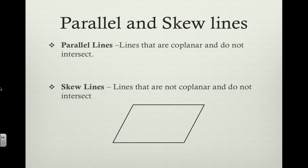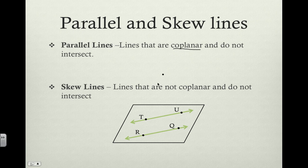First things first, the definition of parallel lines. Parallel lines are lines that are co-planar and do not intersect. Co-planar means that they lie in the same plane. For example, line TU and line RQ are co-planar — they lie in this same plane right here and they do not intersect each other. So therefore, they are parallel.